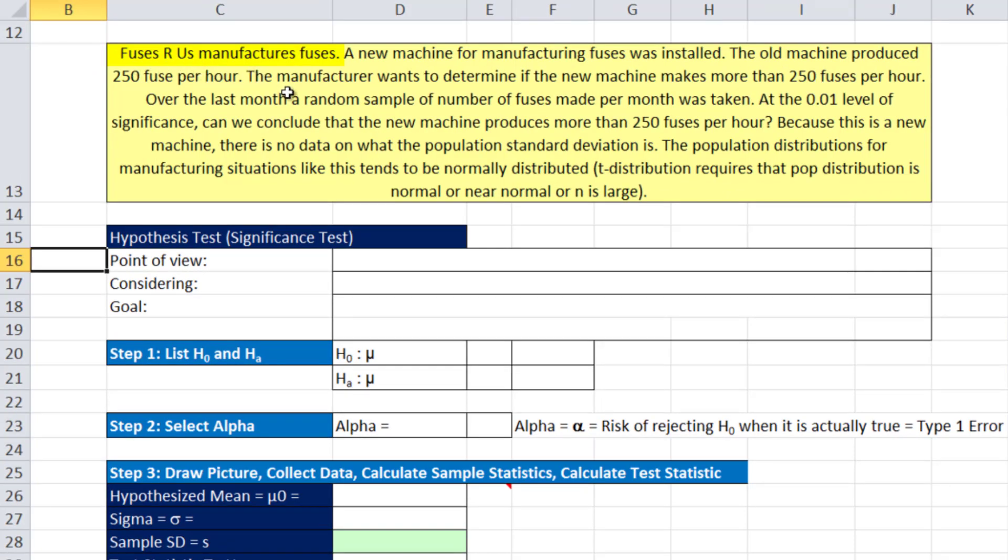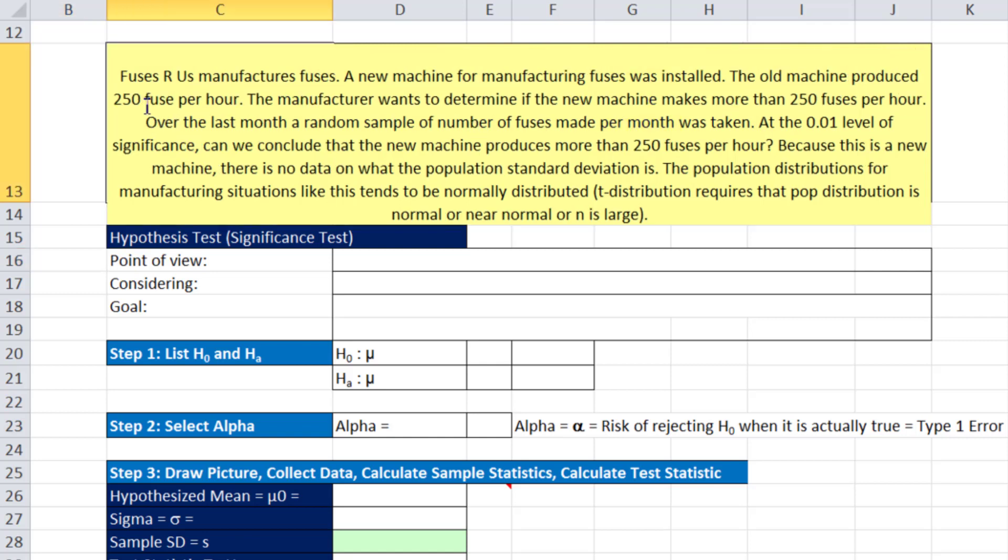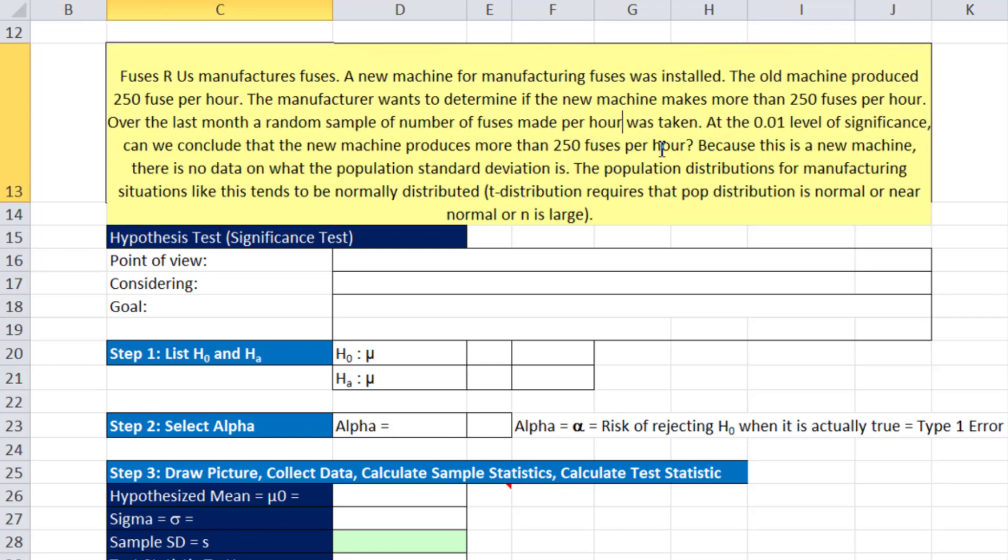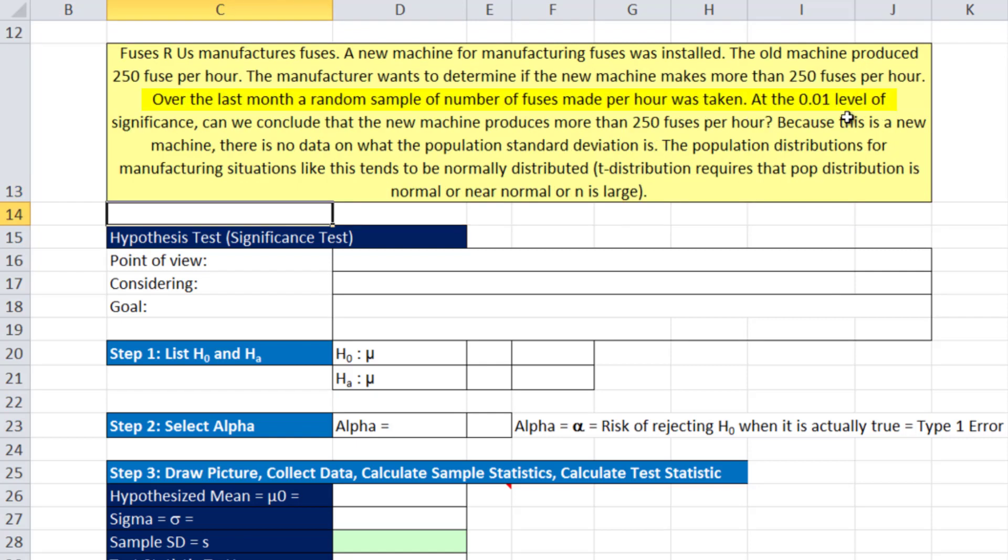Fuses R Us manufacturers fuses. A new machine for manufacturing fuses was installed. The old machine produced 250 fuses per hour. The manufacturer wants to determine if the new machine makes more than 250 fuses per hour. In essence, does the machine do better than the old one? Over the last month, a random sample of number of fuses made per hour was taken. At the 0.01 level of significance, can we conclude that the new machine produces more than 250 fuses per hour?